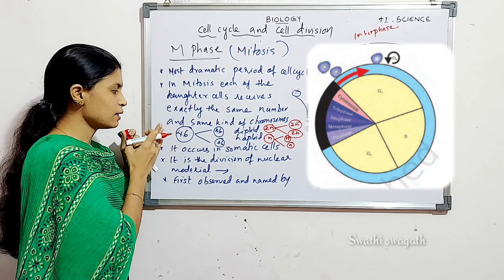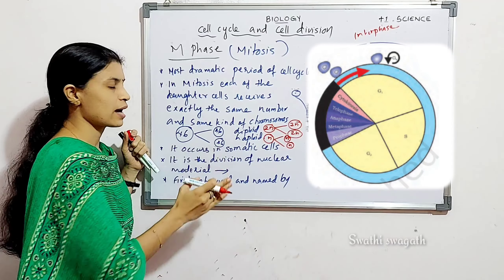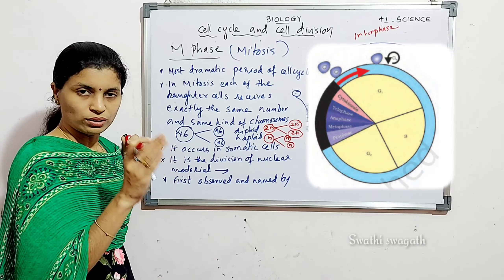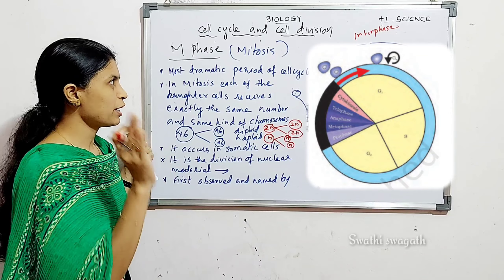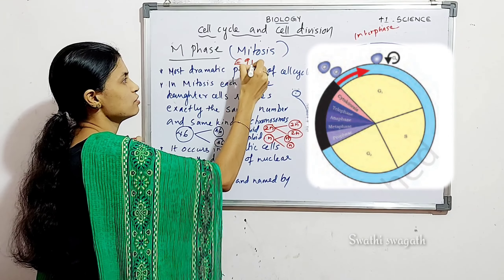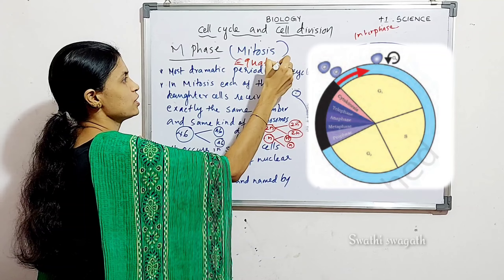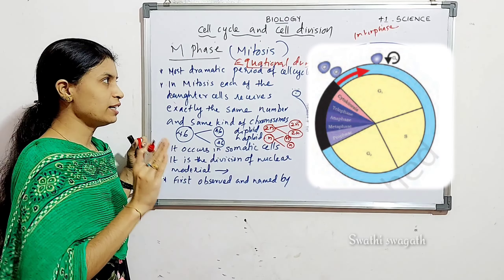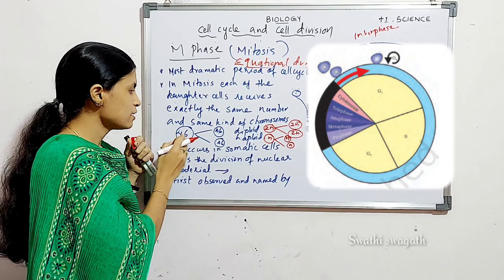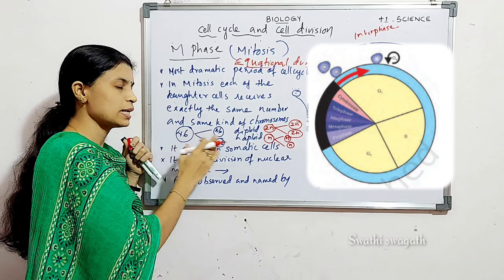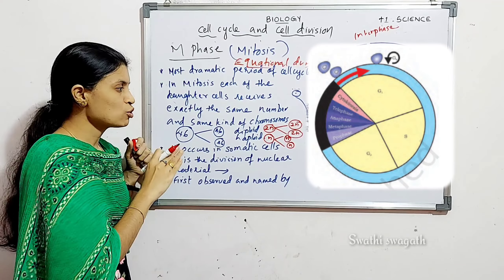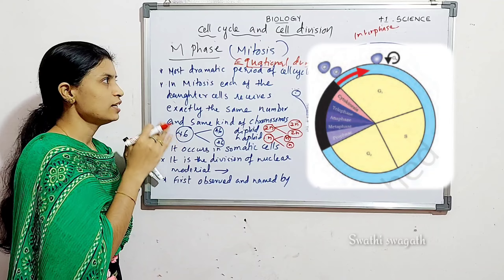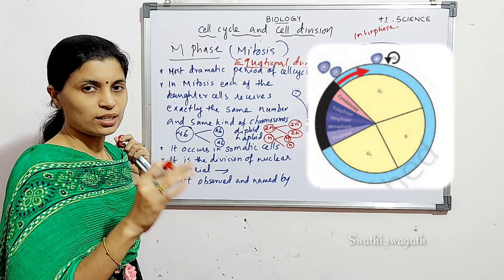In mitosis, the parent cell and daughter cells have the same number of chromosomes — the chromosome number remains the same. So this type of division, that is mitosis, is also called equational division. It is a very important point. Why is it called equational division? Because the parent cells and the daughter cells have the same number of chromosomes — the chromosome number remains equal.